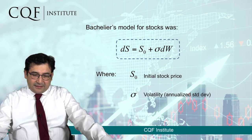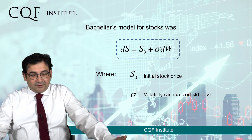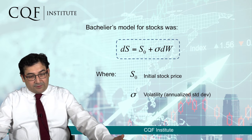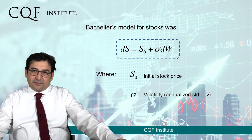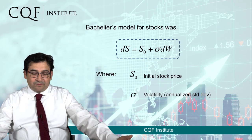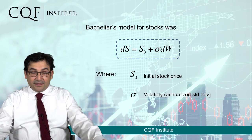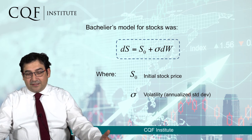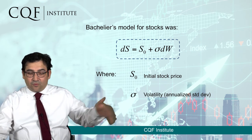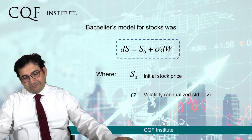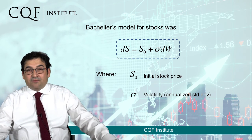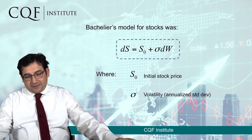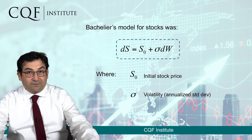Bachelier himself used this idea to construct a model for stocks in 1900. The model he came up with is: dS equals S0 plus sigma times dW. This means that if we start with the value of the stock S0 today, we can model through jumps up and down what will happen to the stock in the future. dS represents the change in the price of the stock, and sigma is the volatility.